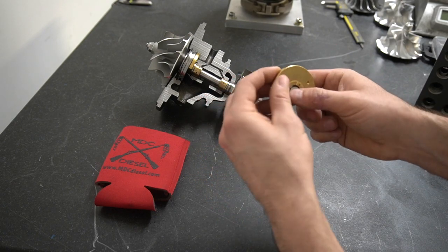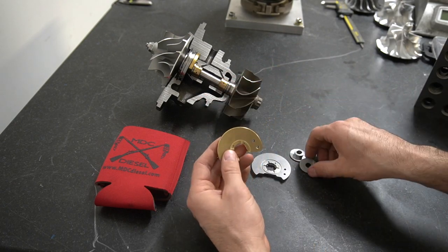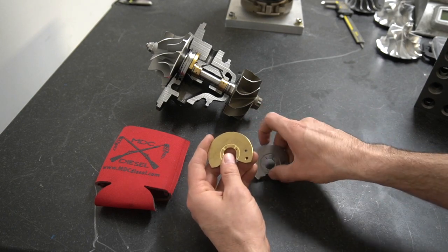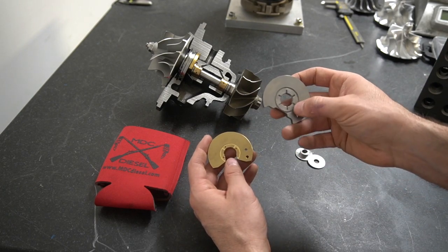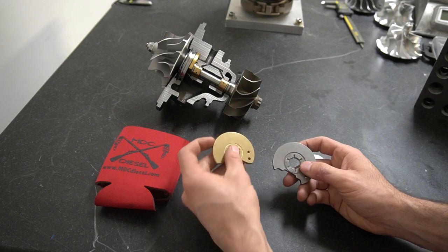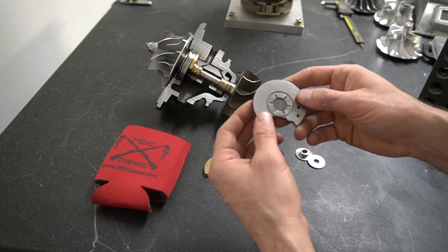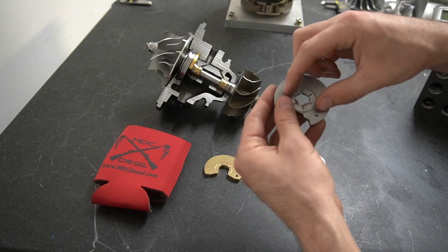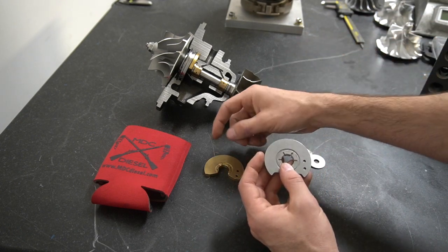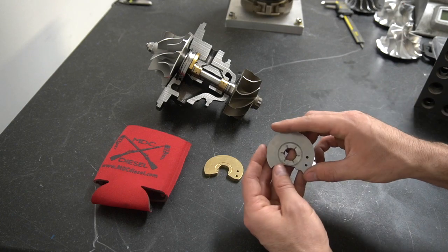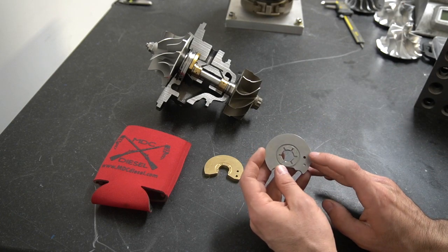Now I get a lot of questions as to which one is necessary, which one is better. Of course this 360 is going to have more surface area than this standard 270. It's also steel. It's also a little bit larger diameter. If you actually measure this, it measures about 10% wider diameter, so there's more surface area on this unit.